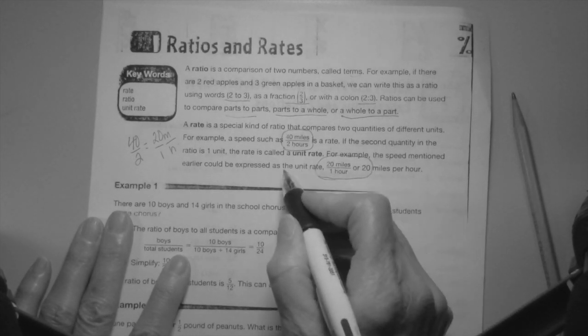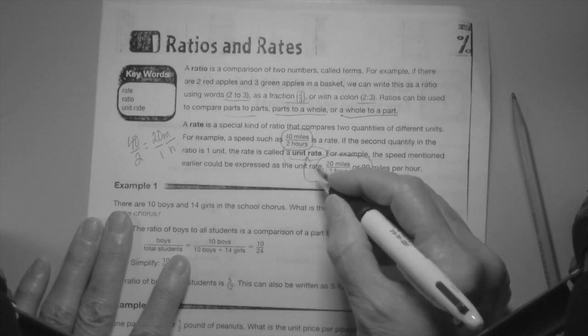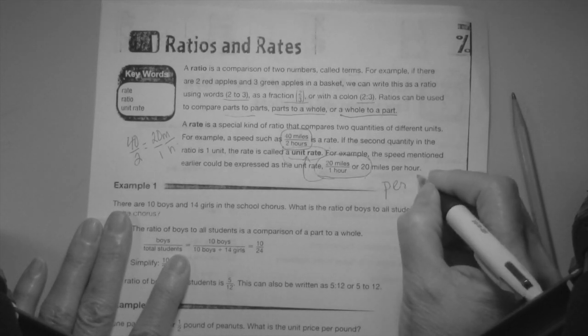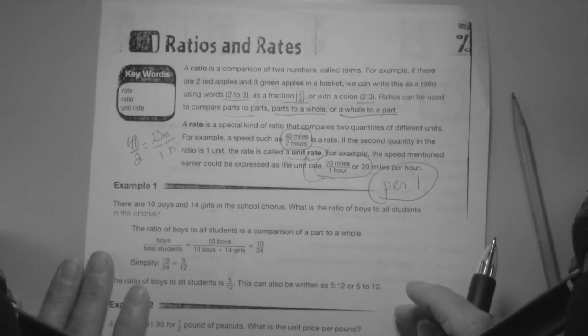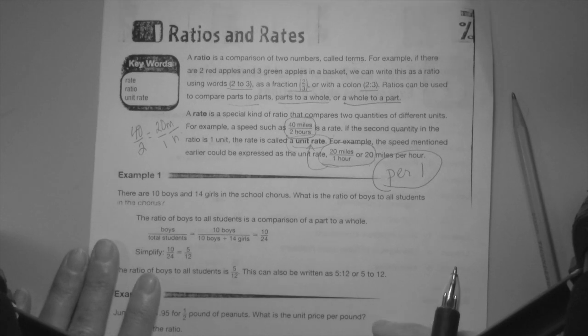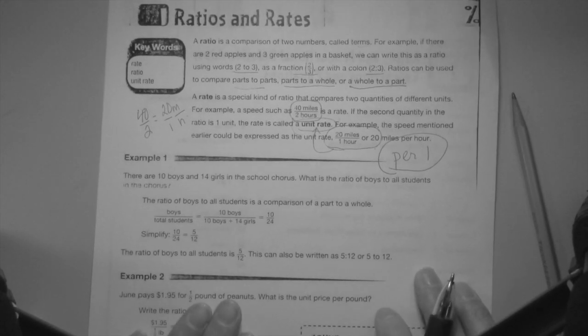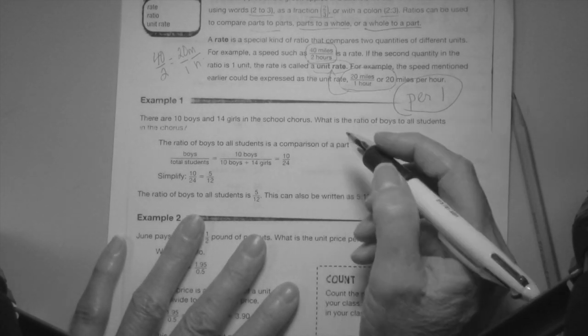So the unit rate is 20 miles per hour. That is called the unit rate when it is per one, very important to understand. Unit rate is per one, per one whatever you're working on. Could be buying food, apples, snacks, buying notebooks, whatever it is, per one.